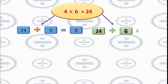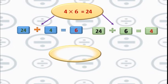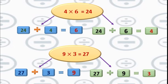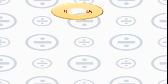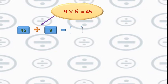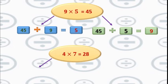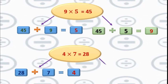24 divided by 6 equals 4. Next: 27 divided by 3 equals 9, and 27 divided by 9 equals 3. Then: 9 fives are 45, so 45 divided by 9 equals 5, and 45 divided by 5 equals 9. And: 4 sevens are 28, so 28 divided by 7 equals 4, and 28 divided by 4 equals 7.